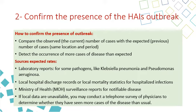The second step of the initial outbreak investigation is to confirm the presence of a hospital-acquired infection outbreak. To confirm, compare the current observed number of cases with the expected previous number of cases at the same location and period. Also detect the occurrence of more cases of disease than expected, using laboratory reports for some pathogens like Legionella pneumonia and Pseudomonas, or local hospital discharge records or local mortality statistics for hospitalized infections.